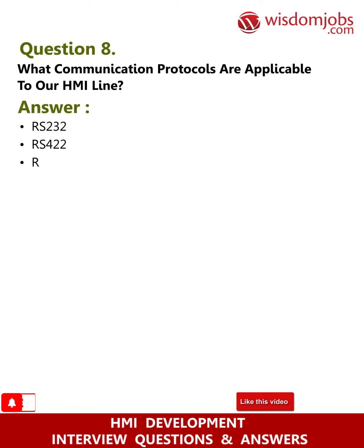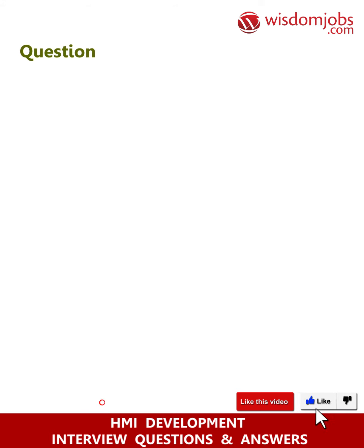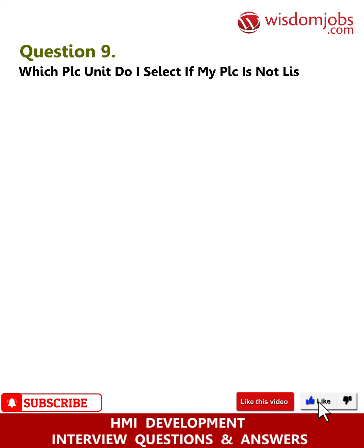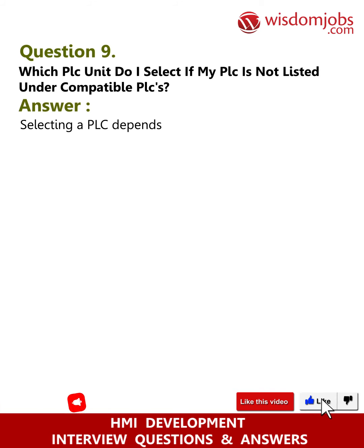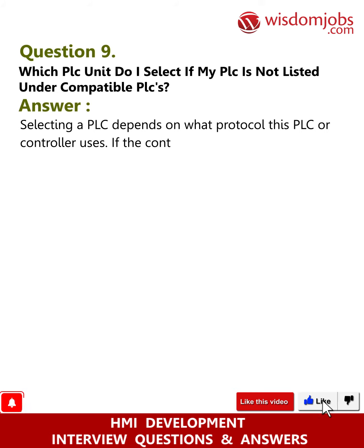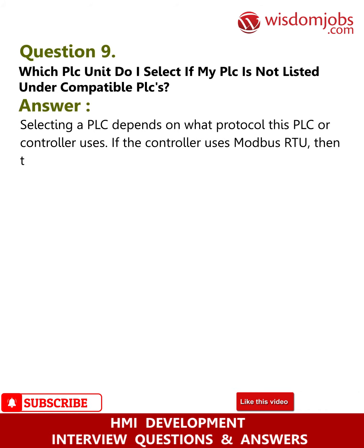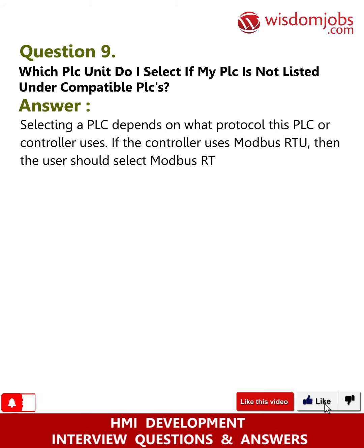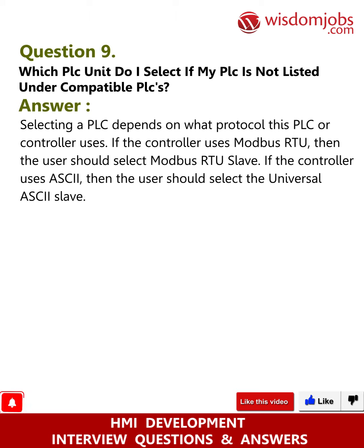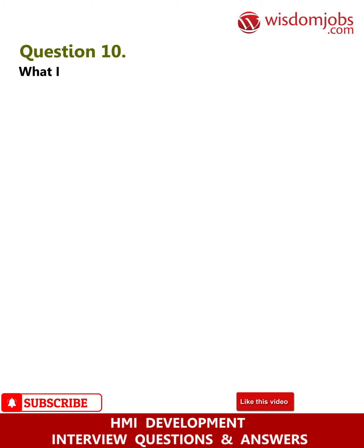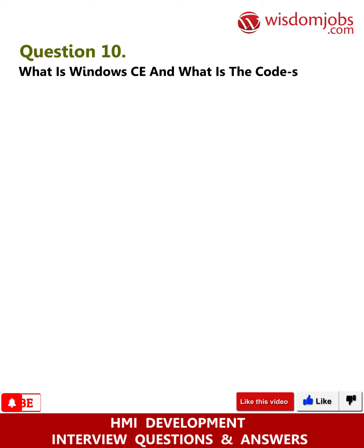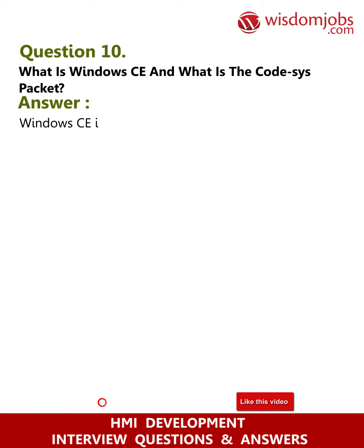Question eight: What communication protocols are applicable to our HMI line? Answer: RS-232, RS-422, RJ-45. Question nine: Which PLC unit do I select if my PLC is not listed under compatible PLCs? Answer: Selecting a PLC depends on what protocol the PLC or controller uses. If the controller uses Modbus RTU, then the user should select the Universal ASCII Slave.